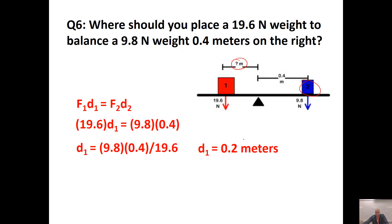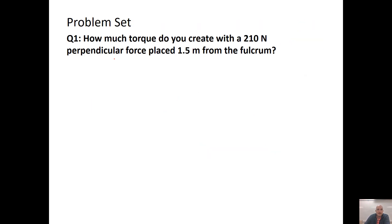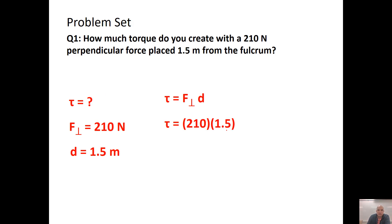Now it's time for the problem set. Make sure you try these on your own, then come check your work. If you need more help, go back to the beginning of the lesson. Problem 1: How much torque do you create with a 210-newton perpendicular force placed 1.5 meters from the fulcrum? Since they told you it's perpendicular, go directly to the equation: 210 times 1.5 equals 315 newton-meters of torque.